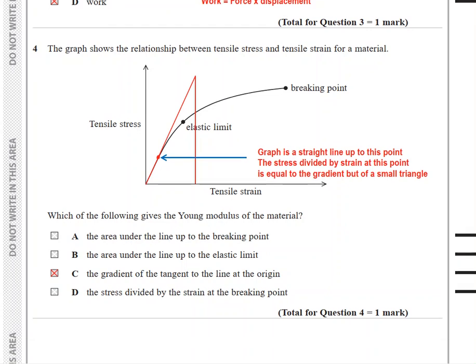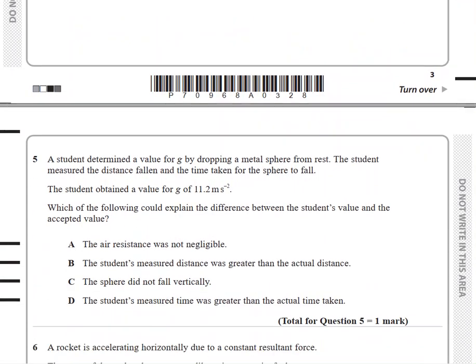For question 5, a student determined a value for g by dropping a metal sphere from rest. The student measured the distance fallen and the time taken for the sphere to fall. The student obtained a value for g of 11.2 m/s². Focus on this part: it says releases it from rest. When you release something from rest, the initial velocity is zero, so the equation comes down to s equals half gt squared.